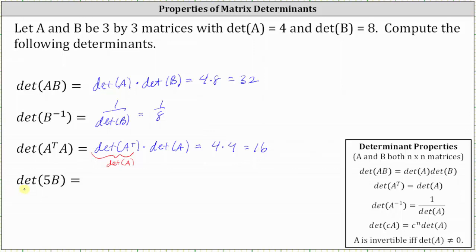For the last example, we have the determinant of 5B. Going back to our properties, the determinant of CA, where C is a constant, is equal to C raised to the power of N, where N is given by the dimensions of the square matrix, times the determinant of A. In our case, the value of C is five, so the determinant is equal to five raised to the power of three, since A and B are both three by three matrices, so N is equal to three, and then we have times the determinant of B. Five to the third is equal to five times five times five, which is 125. The determinant of B is equal to eight, and 125 times eight is equal to 1,000.